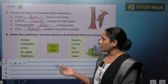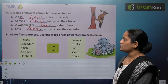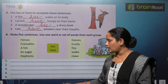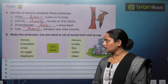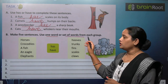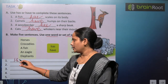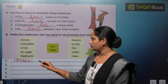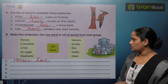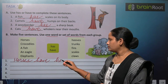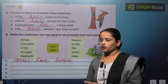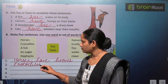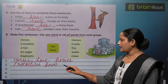Now let's move on to the next exercise. Make five sentences — use one word or set of words from each group. Yahaan pe aapko five sentences banane hain, in words ko use karke. Horses — kitne horse hain? Many. So we will write: Horses have — pooze. Crocodile — crocodiles have scales on their body. Kyunki bohot saare crocodile hain. A fish — kitni fish hai? One. So a fish has fins on its body.